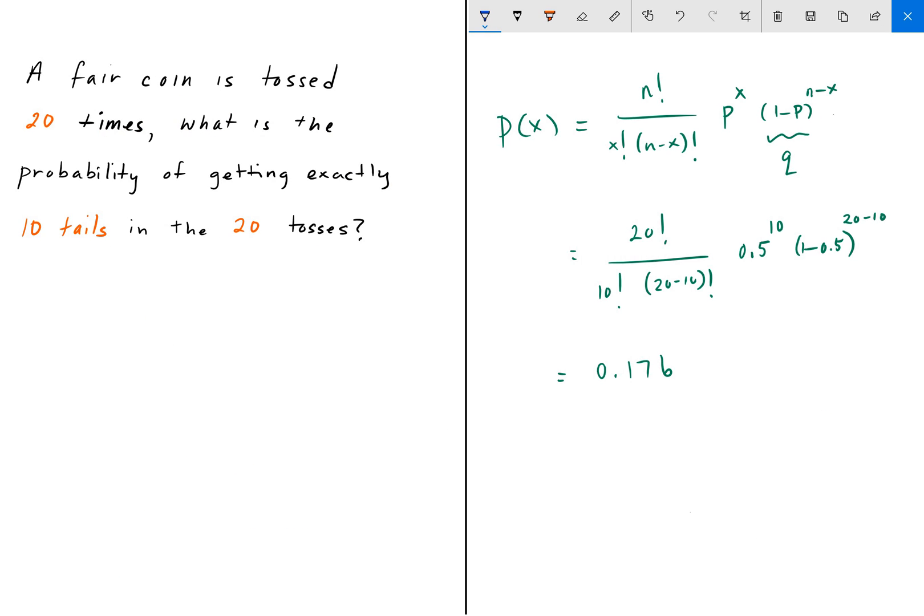There you have it. That's the answer, 17.6%. This is for a fair coin. If we had a bias coin, either bias towards heads or bias towards tails, then we would adjust these probabilities accordingly. Note that the probabilities have to add up to 1, so the probability of failure plus the probability of success add to sum up to 1.